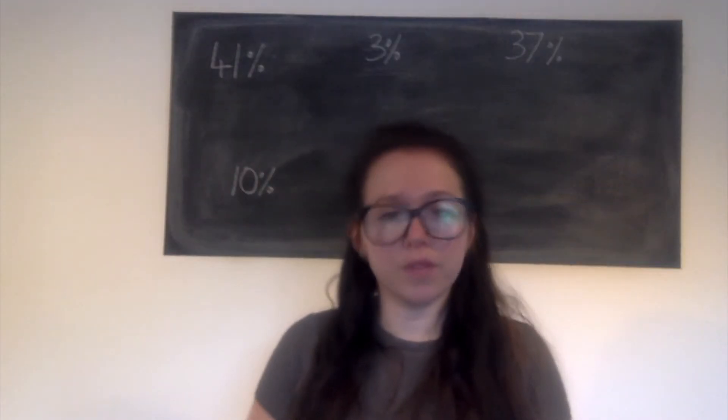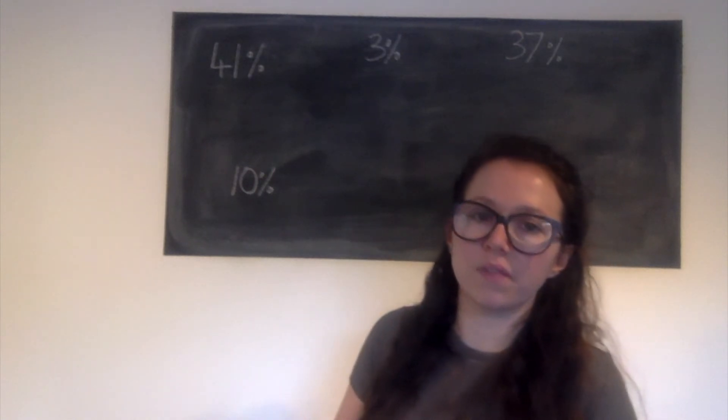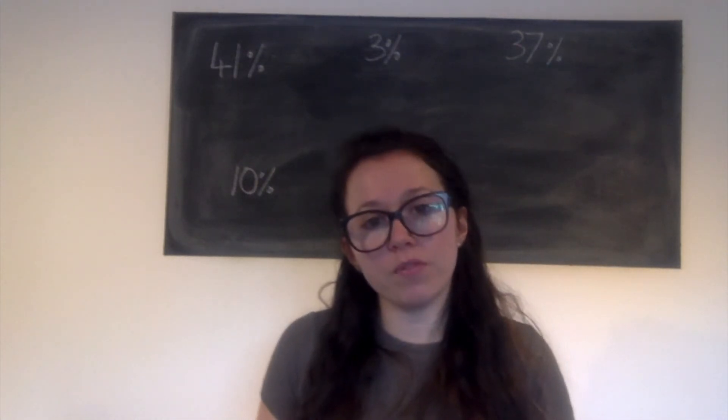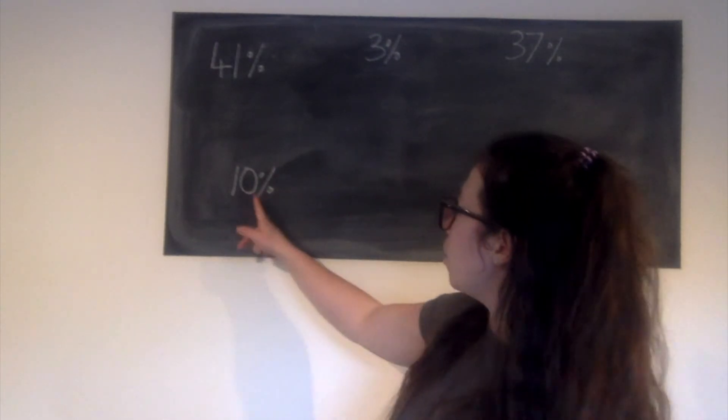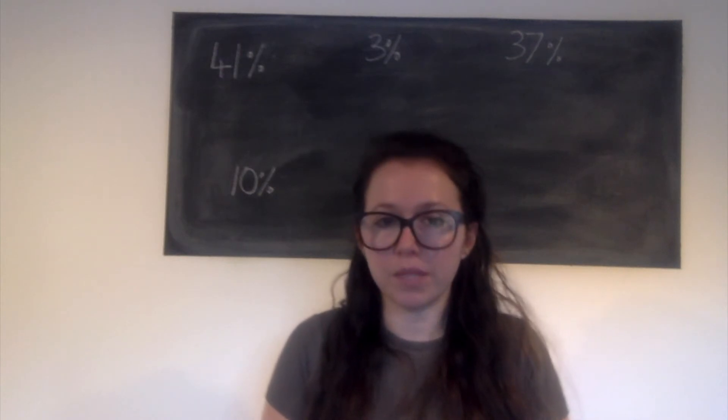This time I want you to have a go at doing it the opposite way around. So you've got the percentages here: 41%, 3%, 37%, and 10%. And I want you to give me the fraction. So remember the fraction is going to be out of 100. This one though, I see, can give me in its simplest form. So the fraction in simplest form.